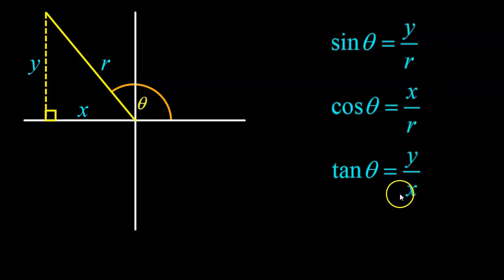What does change, however, would be the signs of each of these three parameters. So x, for example, in the second quadrant, and in the third for that matter, will be negative because we're to the left of the y-axis. Y in the second quadrant will be positive, and I should mention that r will always be positive, regardless of which quadrant you're in.